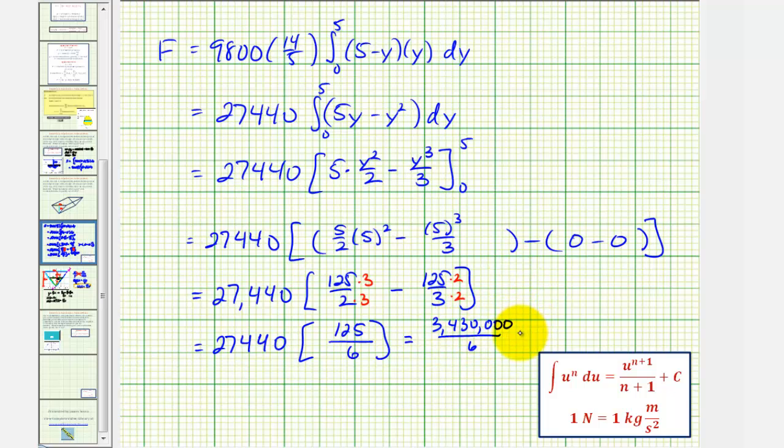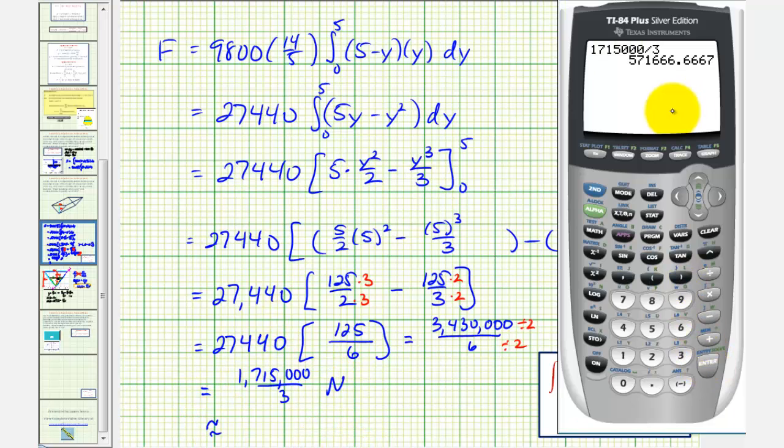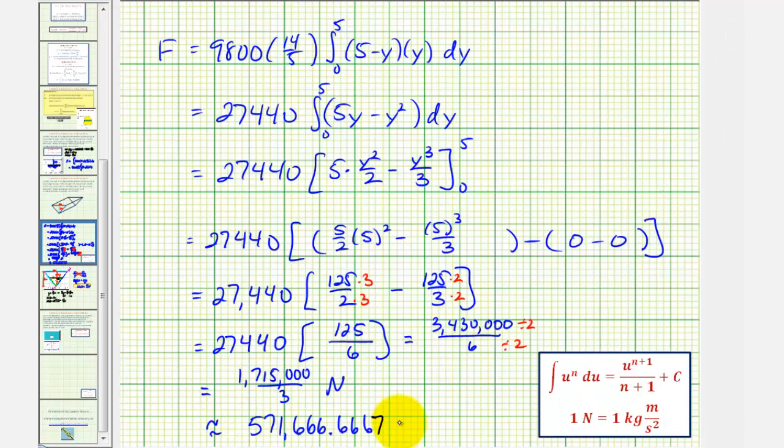Of course we have a common factor of two. So the exact value is 1,715,000/3 newtons. Let's also look at a decimal approximation, which would be approximately 571,666.67 newtons.